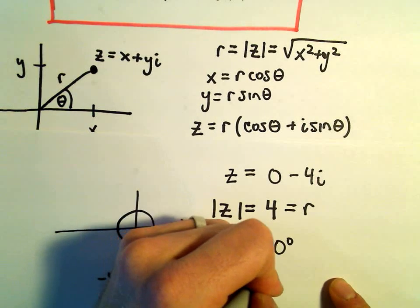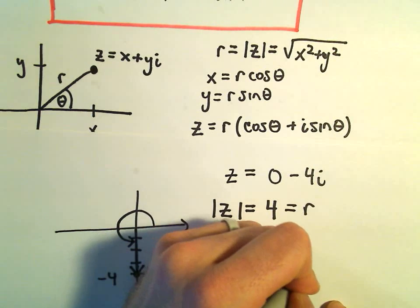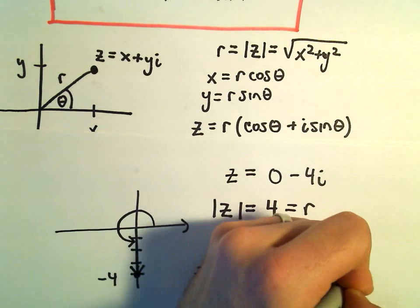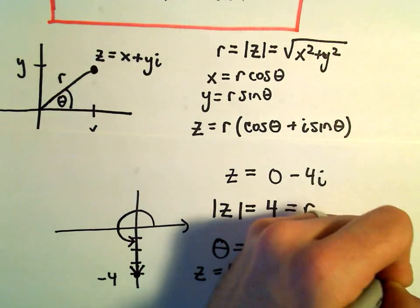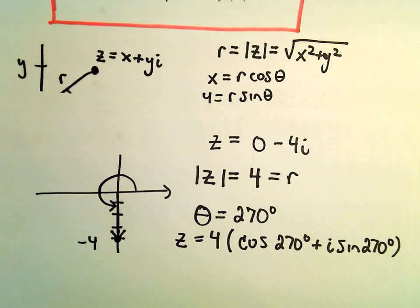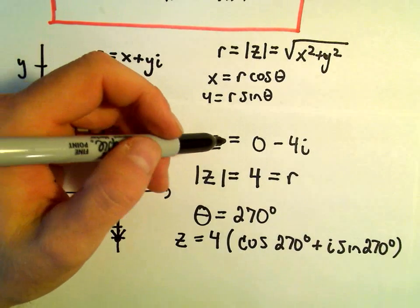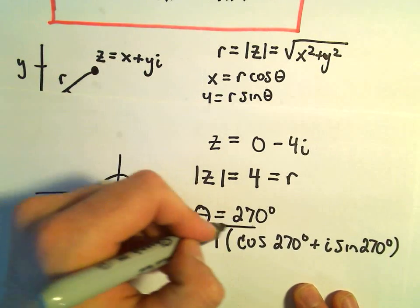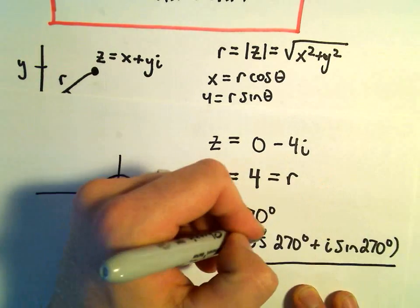And then we'll take cosine of 270 degrees plus i times sine of 270 degrees. And now we've taken our complex number 0 minus 4i, and now we have it in polar form.